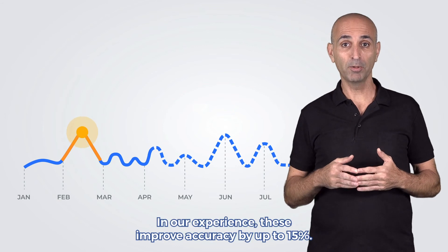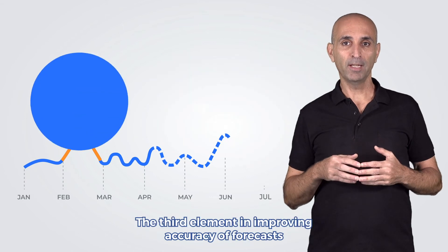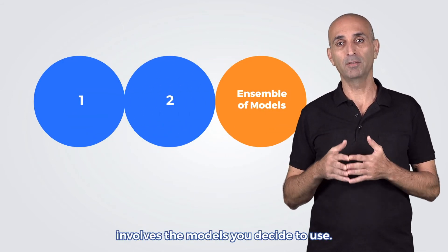In our experience, these improve accuracy by up to 15%. The third element in improving accuracy of forecasts involves the models you decide to use.